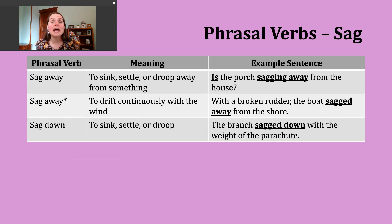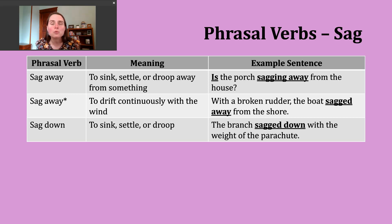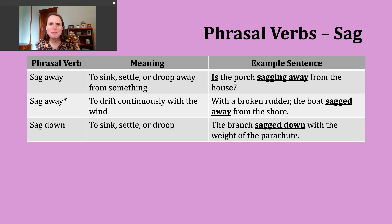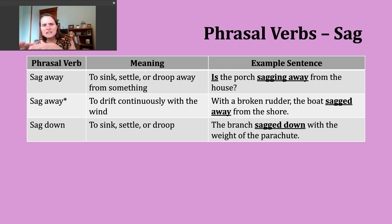Now we're going to take a quick look at a few phrasal verbs. The first one we'll discuss today is to sag away. This can have a couple different meanings. One might be to sink, settle, or droop away from something else. An example of this might be: 'Is the porch sagging away from the house?' — where a deck area slowly starts to sink and become slightly disconnected from the house.